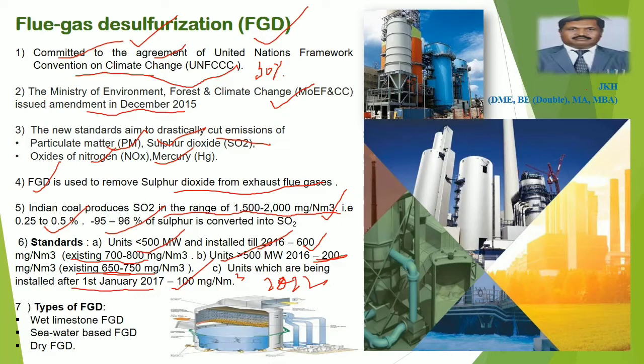What are the types of FGDs? There are three categories of FGDs generally found: sea water based FGD, dry FGD, and wet limestone FGD.